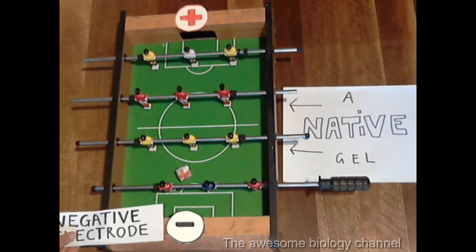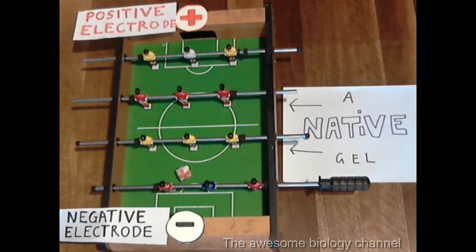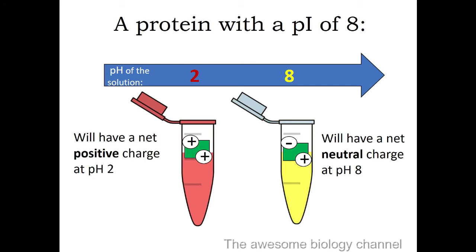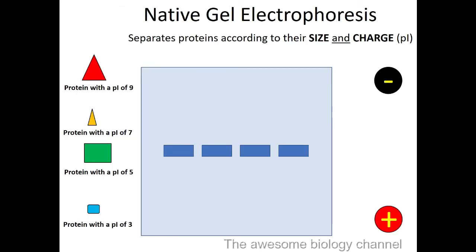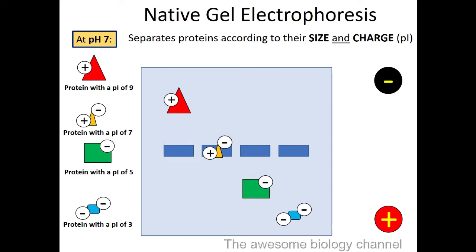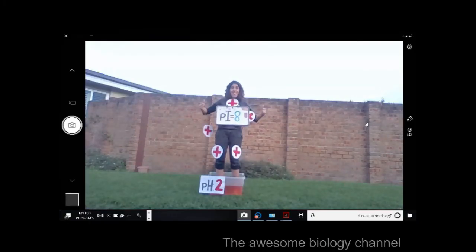If you're ever really stuck and you're not sure which one is which, you can just call it the negative electrode. But the most important thing to remember is: if your PI is higher than the pH, the protein will have a net positive charge.